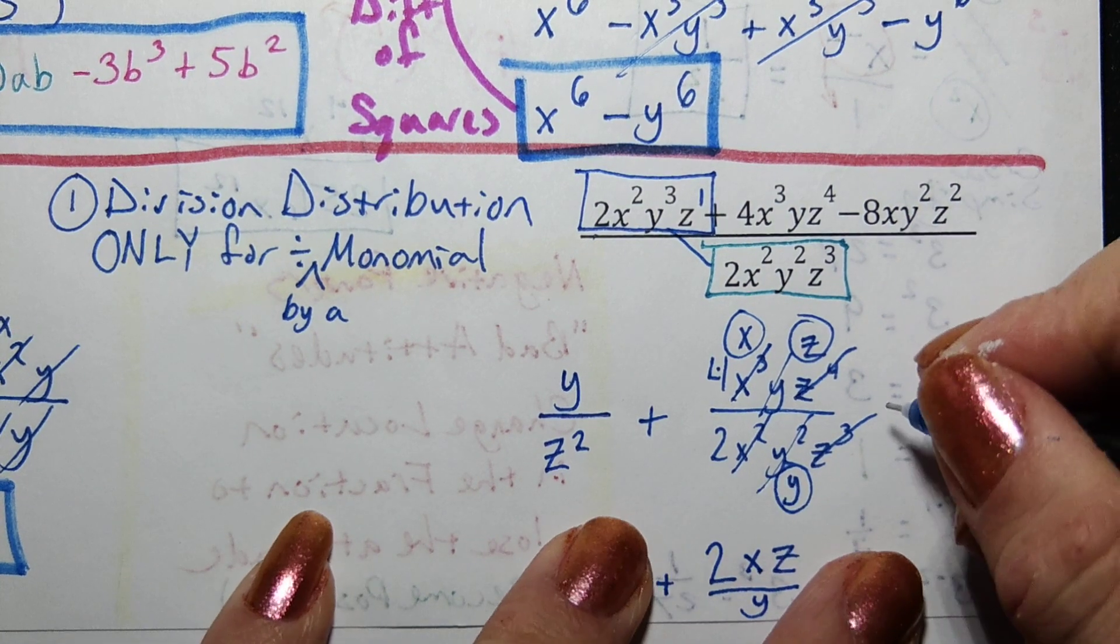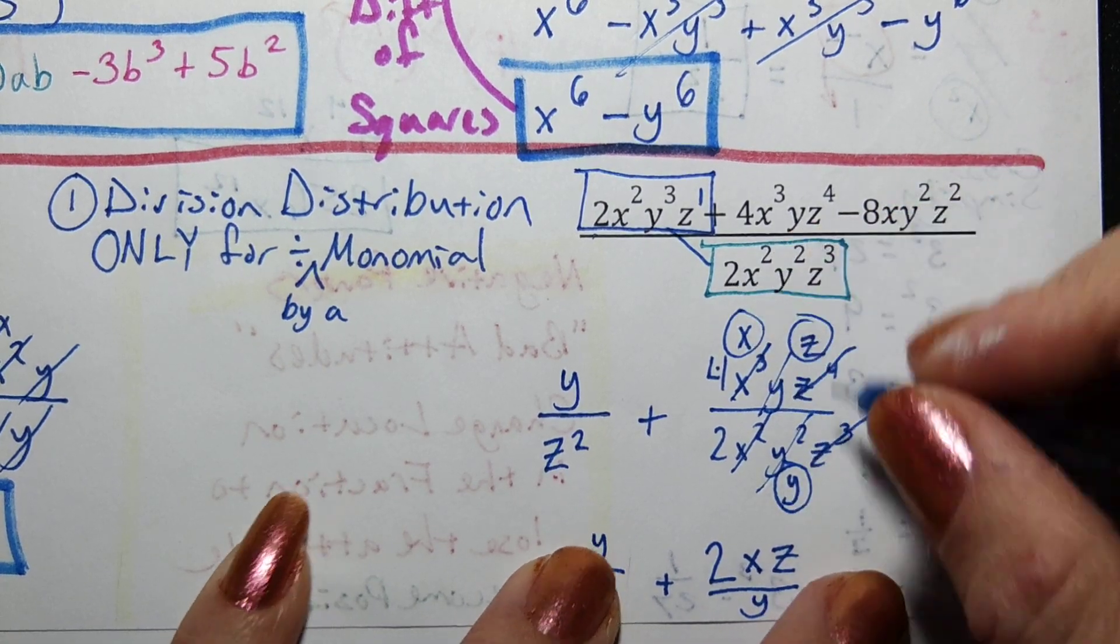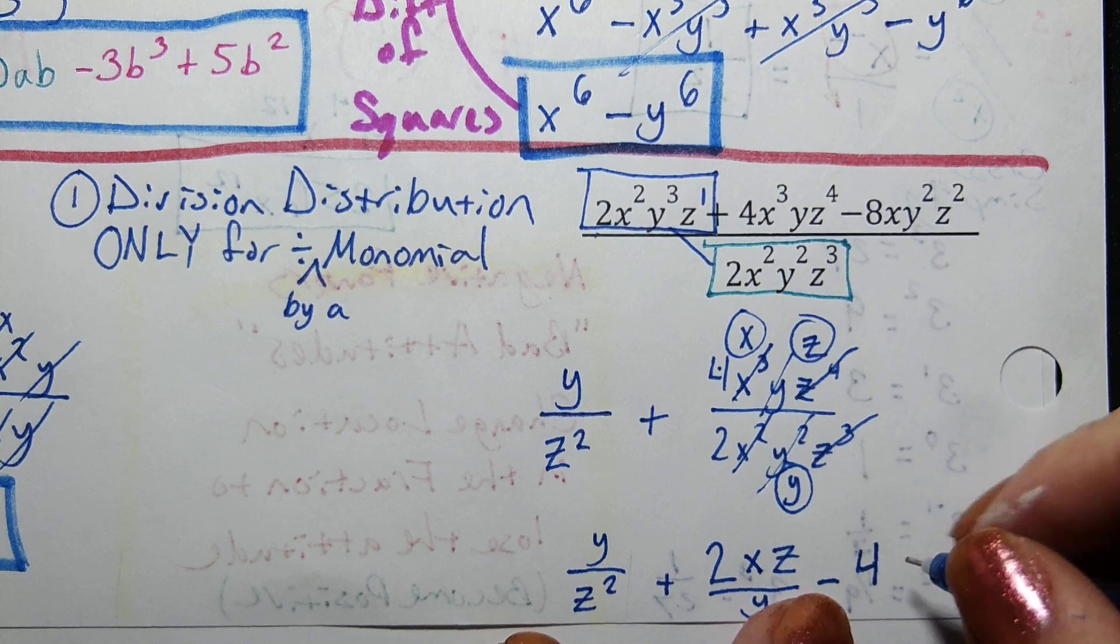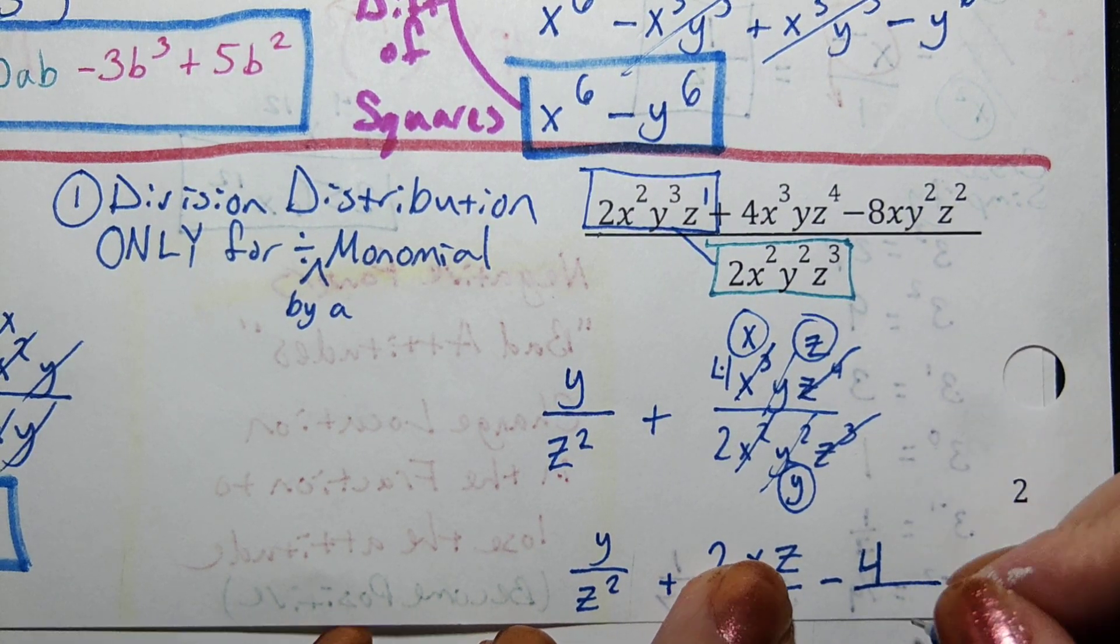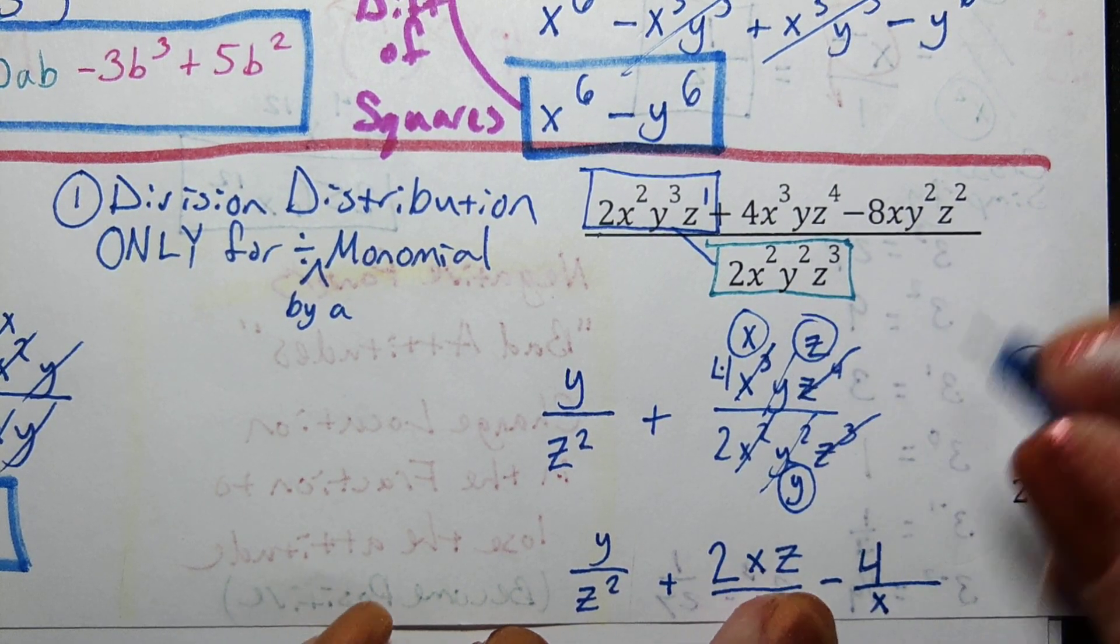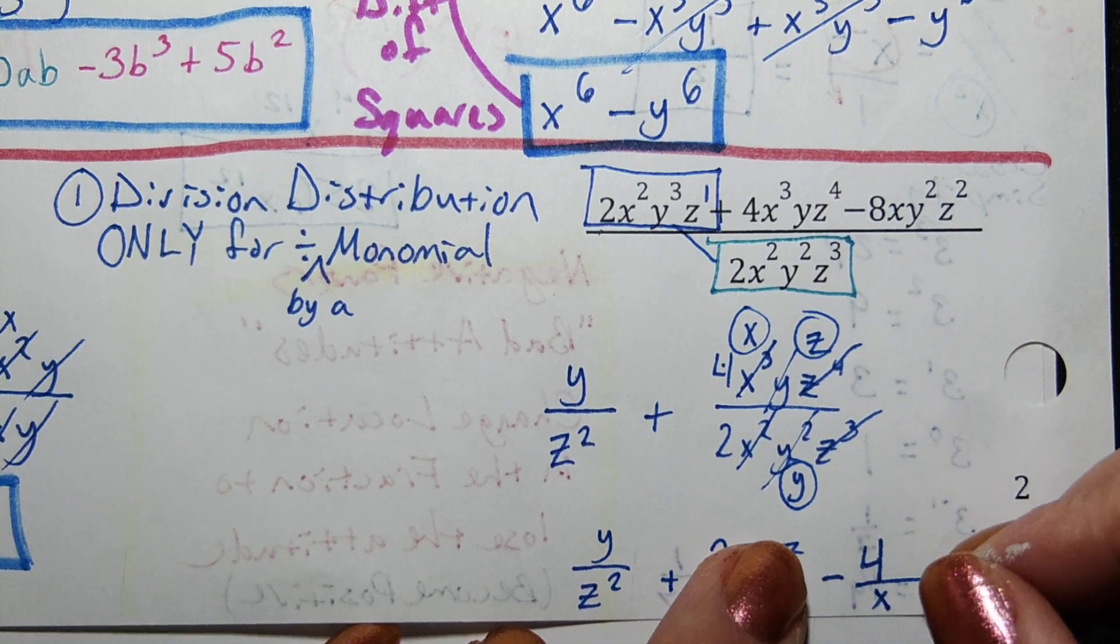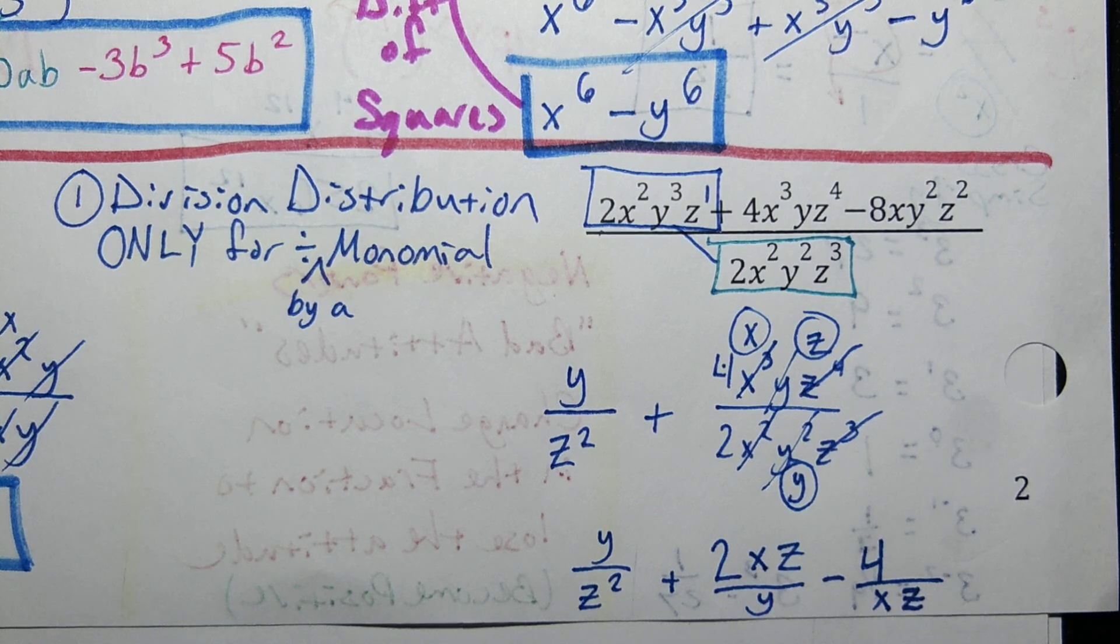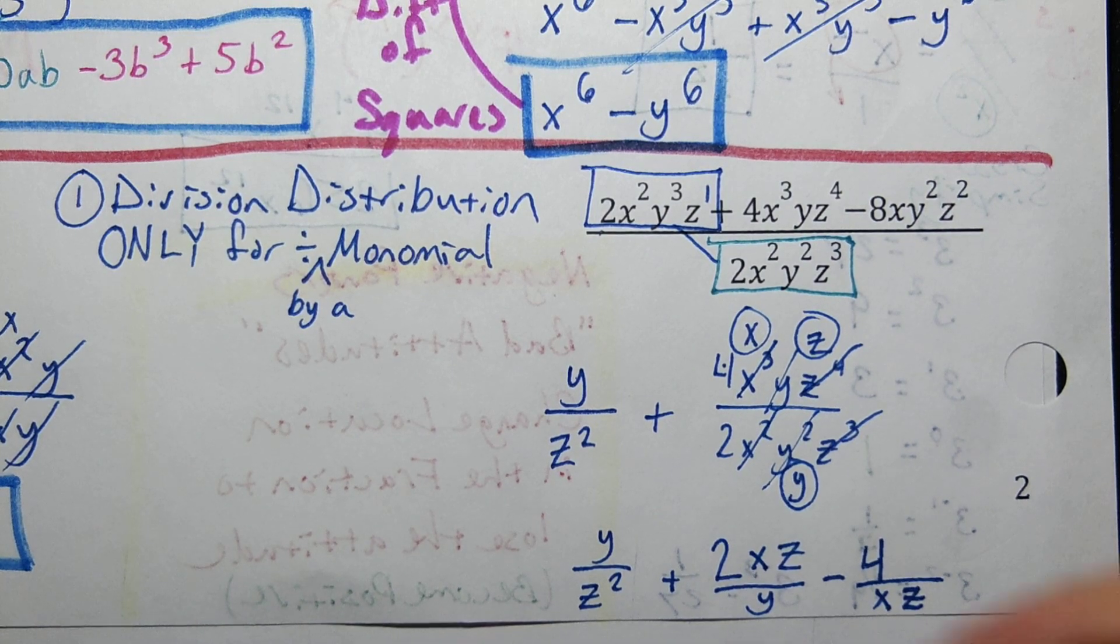Alright folks, so we've got negative 8 divided by 2 is negative 4. Make sure you've got that minus sign there. x over x^2, we've got an x on the bottom. y^2 over y^2, no more y's. z^2 over z^3, we got a z on the bottom. How do we do on that one? I mean I got it right. Are you good? Most of my nose.